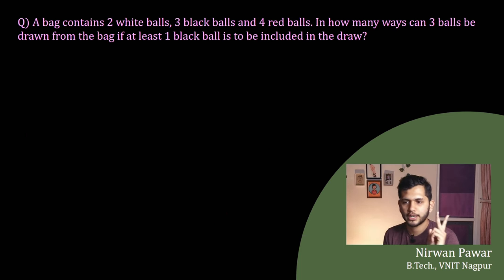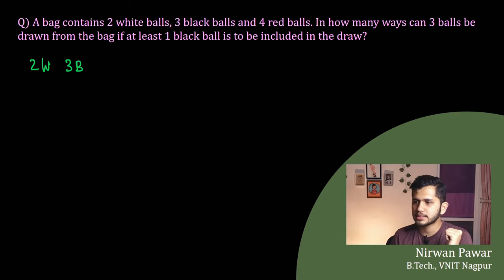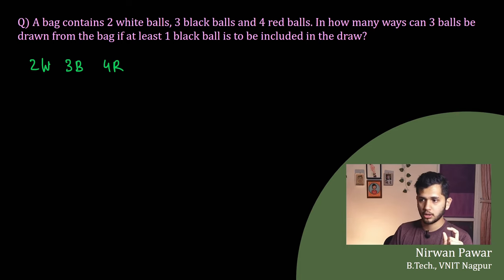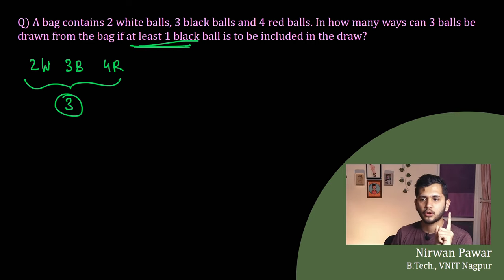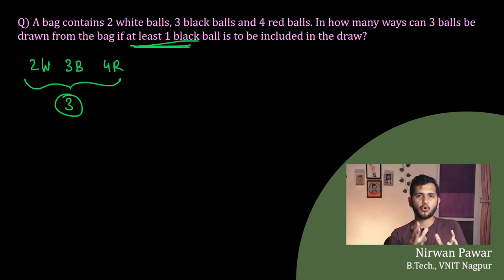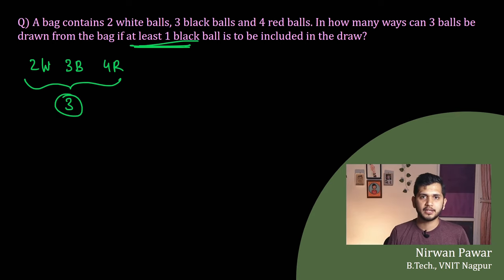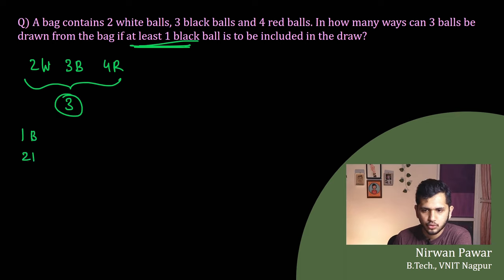Next question: a bag contains two white balls, three black balls and four red balls. In how many ways can three balls be drawn from the bag if at least one black ball is to be included in the draw? Note that 'at least' and 'at most' are two words that many students confuse. At least one black ball means either one black ball, or two black balls, or three black balls will be included.